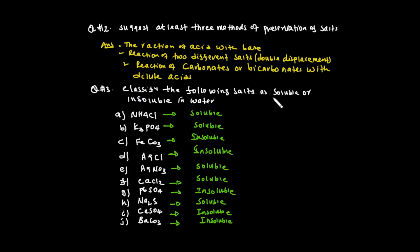Question 3: Classify the following salts as soluble or insoluble in water. Ammonium chloride is soluble in water. Potassium phosphate is soluble in water. Iron carbonate is insoluble in water. Precipitates are insoluble. Barium sulfate is insoluble in water. Calcium chloride — check solubility rules.